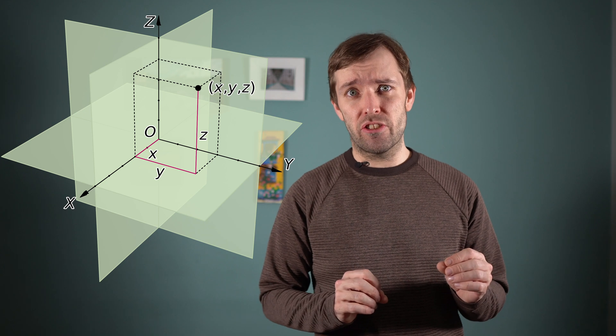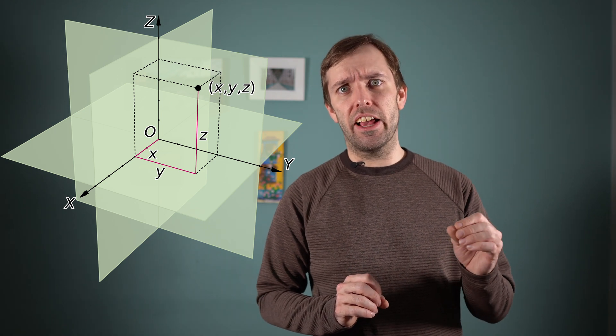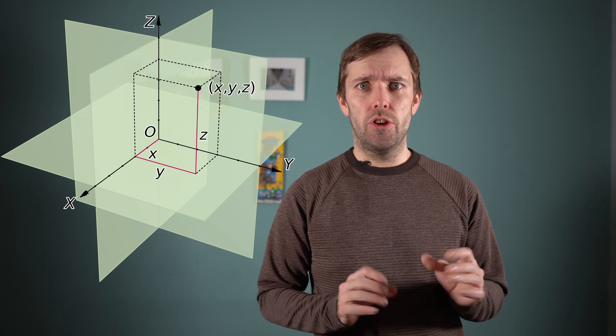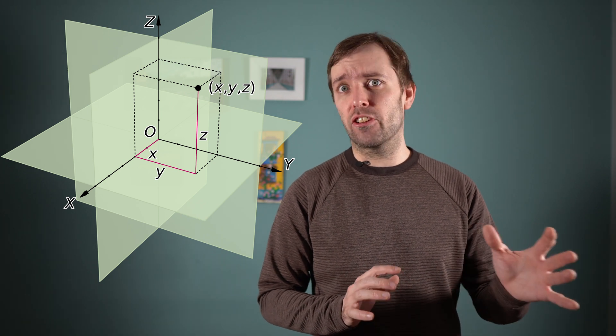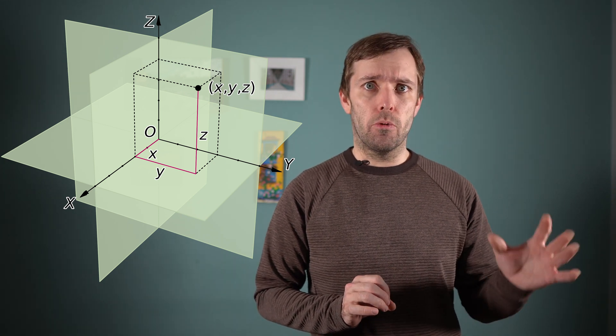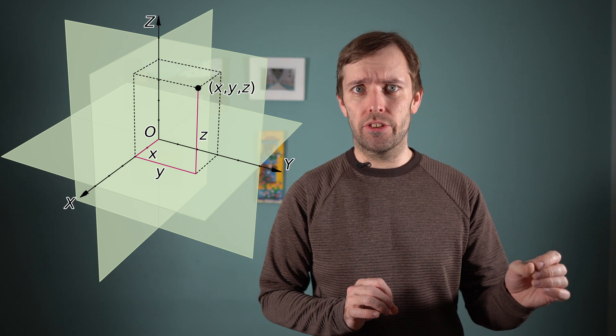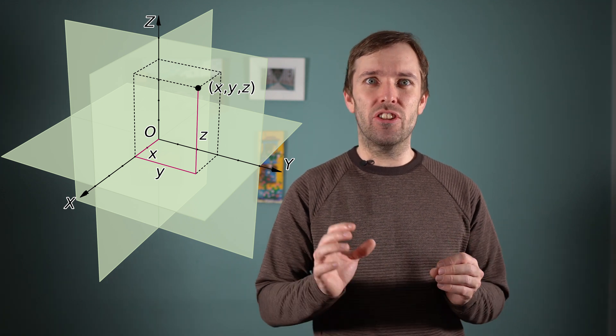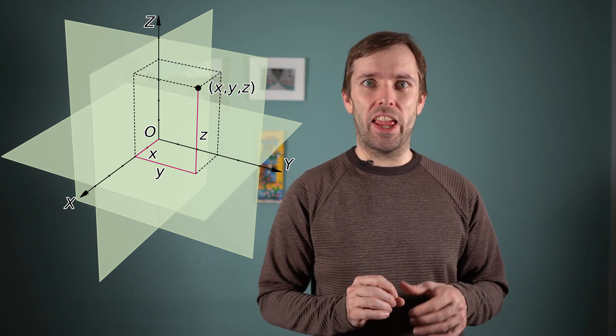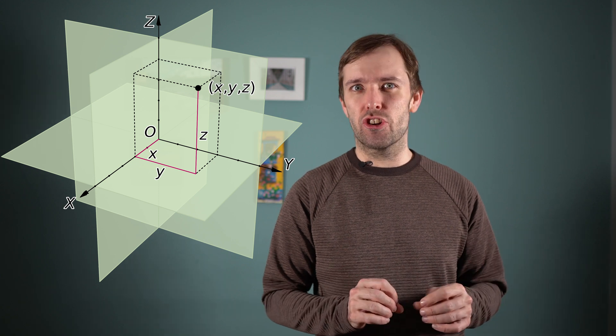The three spatial dimensions we know of are typically called x, y, and z. You could think of any object positioned in your room as having an x, y, z coordinate. With six extra spatial dimensions, it literally means that at every spot in your room, there exists a mind-boggling number of additional points.